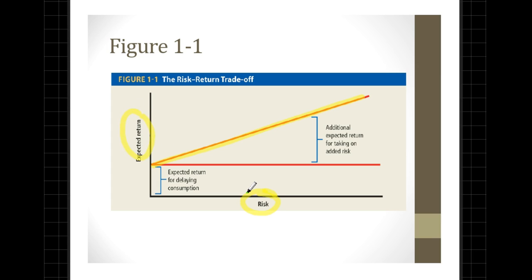This can be represented through an upward sloping line on a risk-return plane. The horizontal axis represents the risk taken and the vertical axis the expected returns. Even at 0% risk there must be an expected return for delaying consumption, which explains the y-intercept. As risk increases, additional expected return must be paid to the investor to compensate for their risk-taking, and that figure briefly describes this risk-return trade-off.